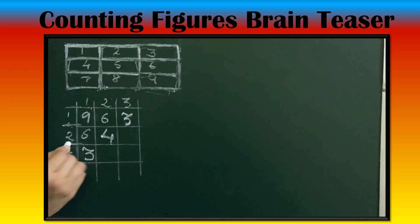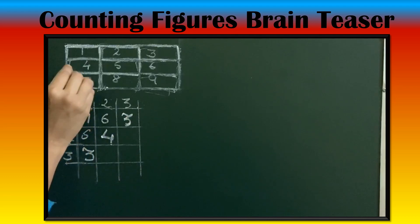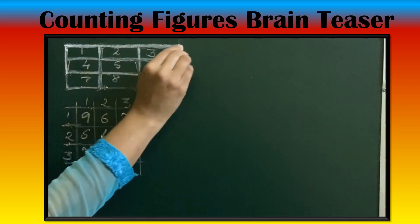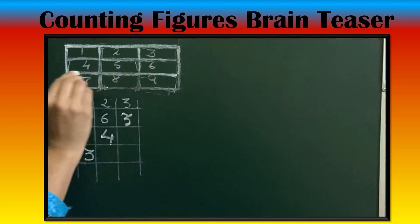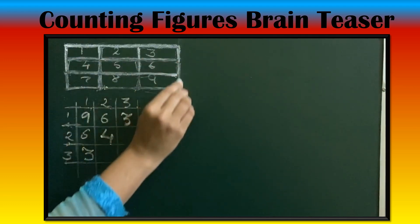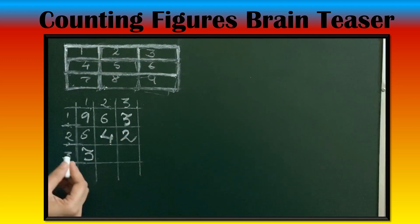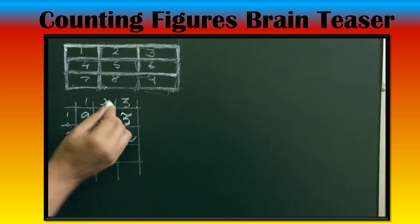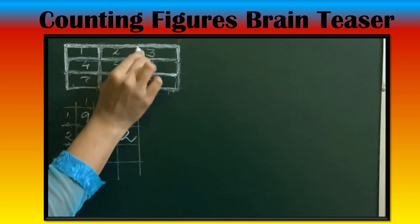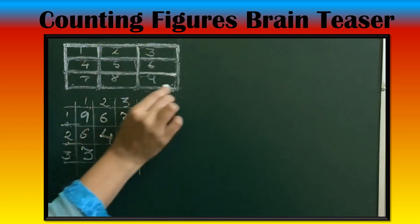Then 2 rows, 3 columns — there are 2 such rectangles. Then 3 rows, 2 columns — there are also 2 such rectangles.